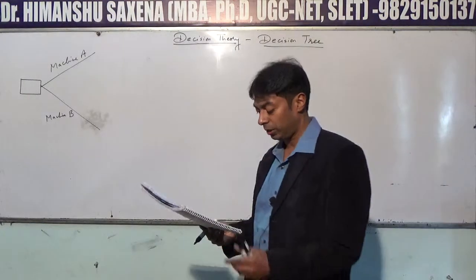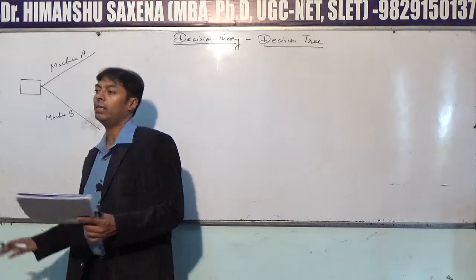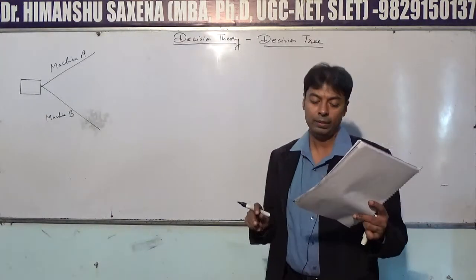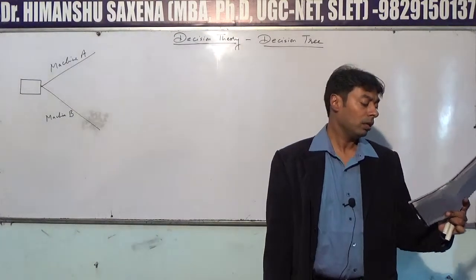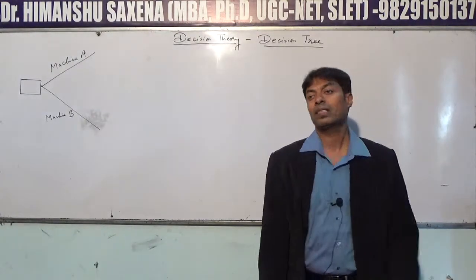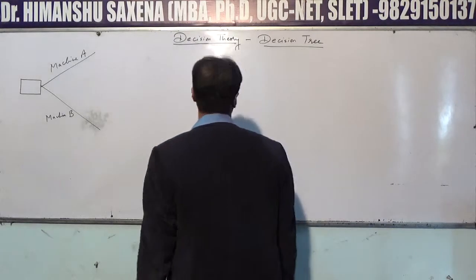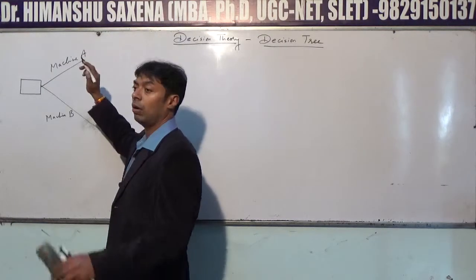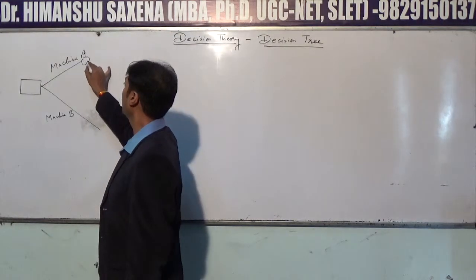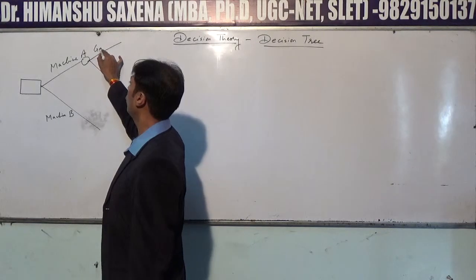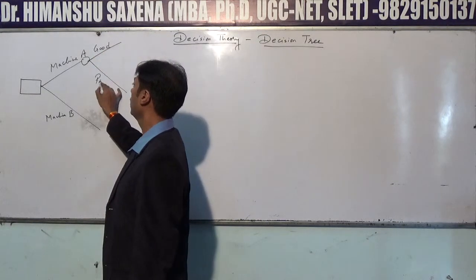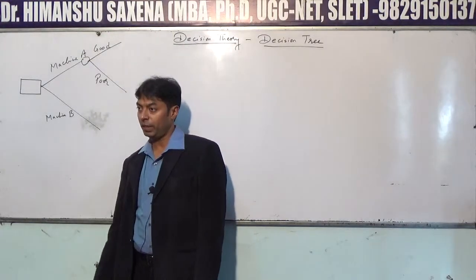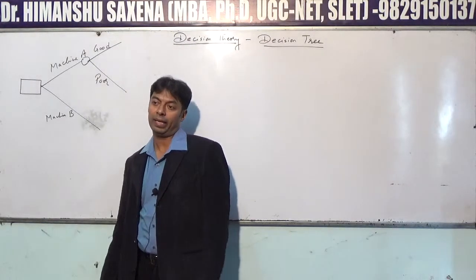If Machine A is used and the raw material is of good quality, the profit will be Rs. 2,000. But if the materials are of poor quality, the profit will be Rs. 1,600. The decision maker has two options and two chances — raw material is either good quality or poor quality. These two factors are states of nature.